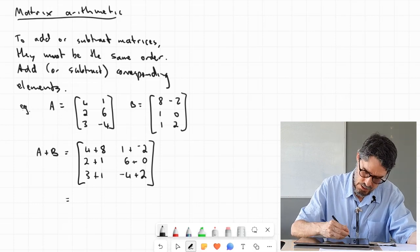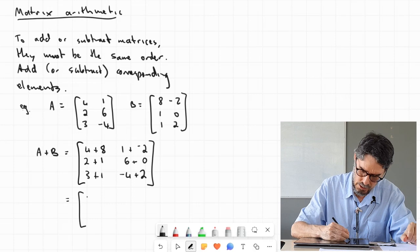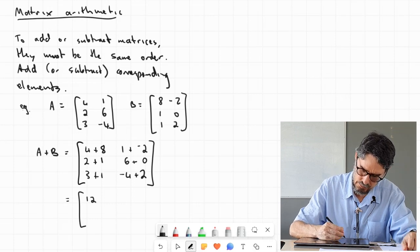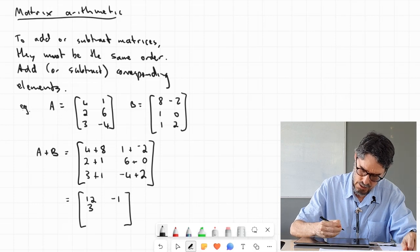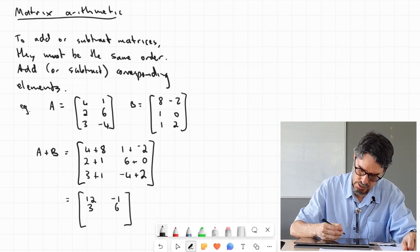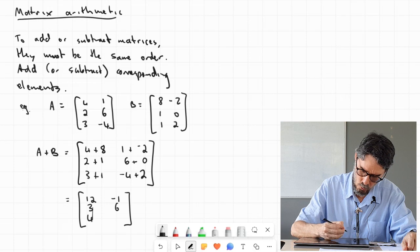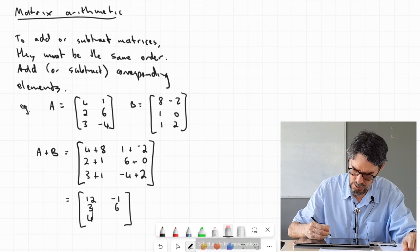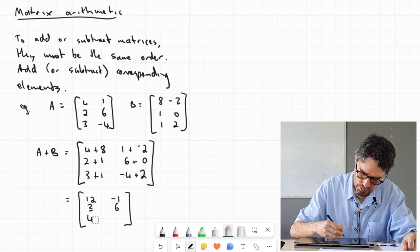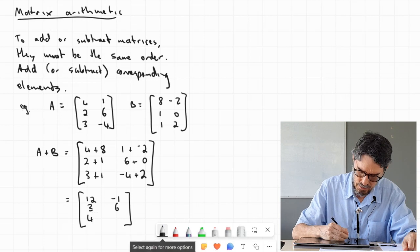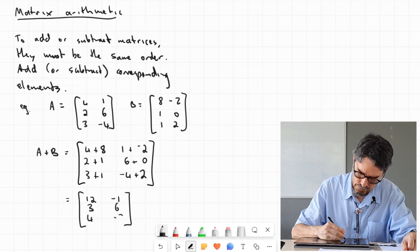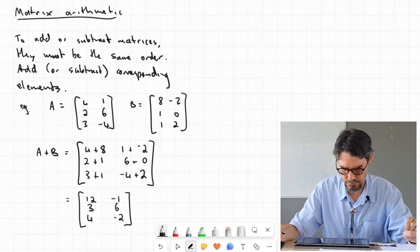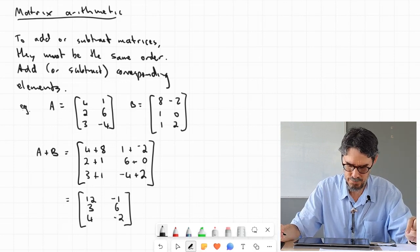OK, let's do the arithmetic. 4 and 8 is 12, 1 and negative 2 is negative 1, 2 and 1 is 3, 6 and 0 is 6, 3 and 1 is 4. And my tablet went a bit funny—negative 4 and 2 is negative 2. So that's A plus B.